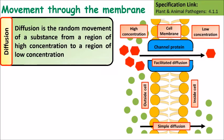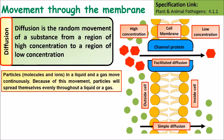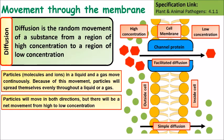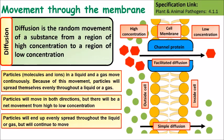Diffusion is the random movement of a substance from a region of high concentration to a region of low concentration. Particles in liquid and gas move continuously, so because of this movement, particles will spread themselves out evenly throughout a liquid and a gas. Particles will move in both directions but there will be a net movement from a high to a low concentration, and particles will eventually spread evenly but will continue to move.